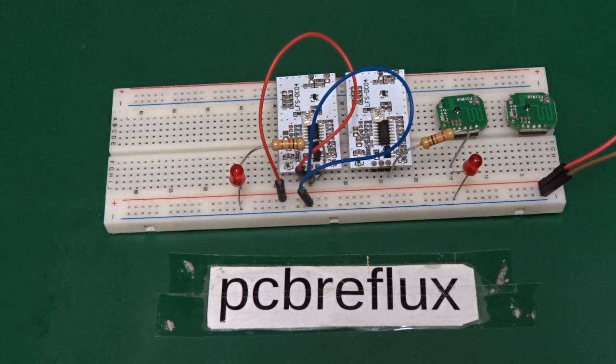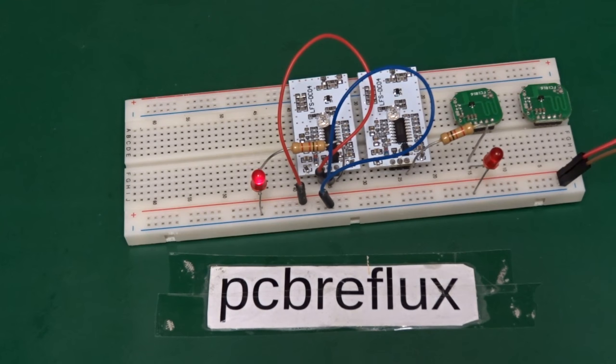And if you buy this module it comes with a light-dependent resistor. Because this module was used by LED lamps, and they only should run if the light is off. So they also have a light sensor. And first I try to use this in the dark. So I switch out the light and test both sensors in total darkness and how sensitive they are for movements.